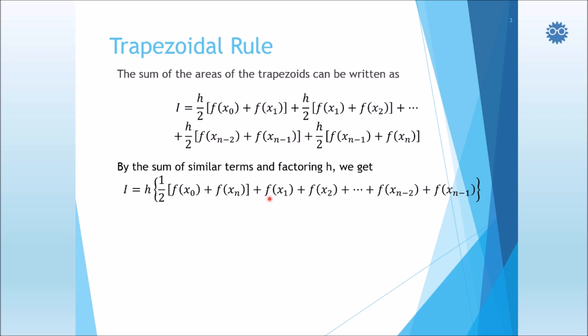Now we can simplify this formula in a more concise form which can be used to program. So we have here h multiplied by the sum of the functions at the lower and upper limits of the integration, plus the summation of f of x sub i, where i equals to 1, 2, to n minus 1.